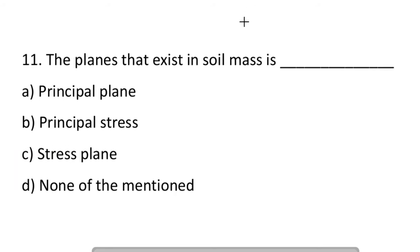Next question: the planes that exist in soil mass are. Option A: principal plane. Option B: principal stresses. Option C: stress plane. Option D: none of the mentioned. So the answer is A, principal plane.